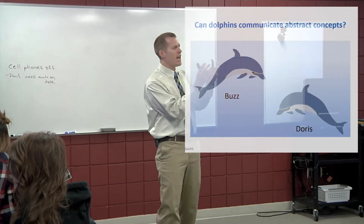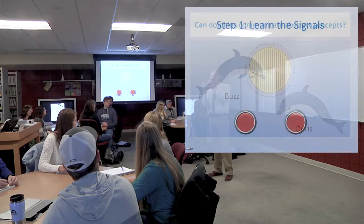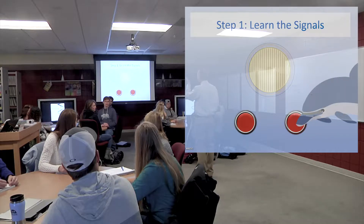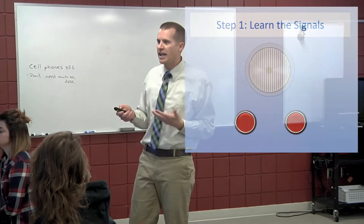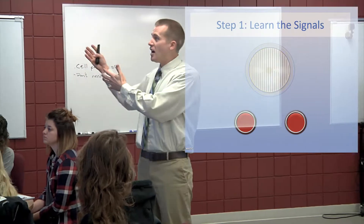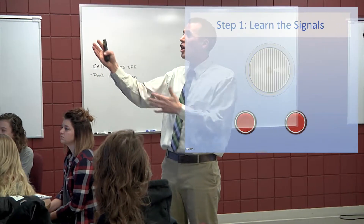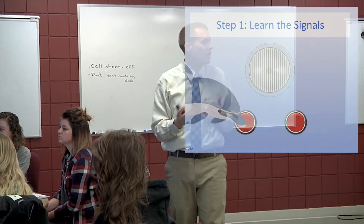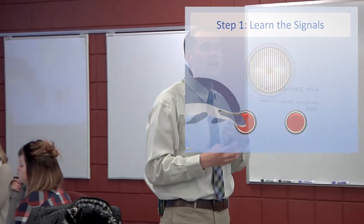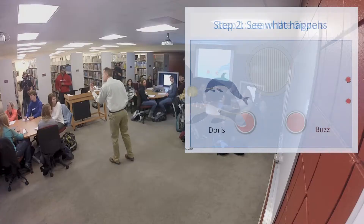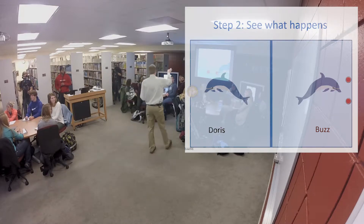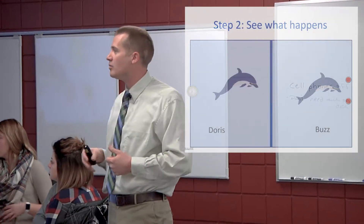Dr. Bastian had on the side of the pool a light. If the light came on and glowed steadily, they'd learn to push the button on the right side, whereas if the light flashed intermittently, they'd learn to push the button on the left. The researcher then placed a screen down through the middle of the pool so that Doris could see the light and Buzz had access to the button.